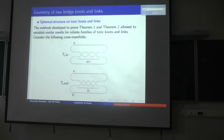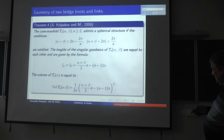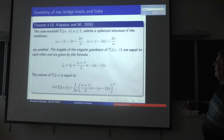The same idea can be used to investigate so-called toric knots and links, shown in the picture. This is a joint result with Sartor and Konnikov. In particular cases where alpha is between two given numbers, the cone manifold admits a spherical structure, and the volume of the spherical structure is given by a formula generalizing the previous result. The existence of the spherical metric in this case was indicated by T. For the two-component case, the condition on the angle takes another form, and the volume is given by a quadratic polynomial in terms of the cone angles.